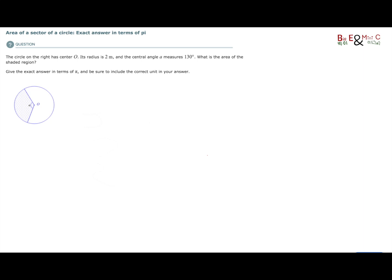We are talking about area of a sector of a circle. Sector is another word for part and we're talking about exact answer in terms of pi. This is actually a little bit easier than using the approximate answer for pi because we get to leave pi just as a nice symbol. We don't have to actually use the decimal 3.14 and that makes the calculations easier.